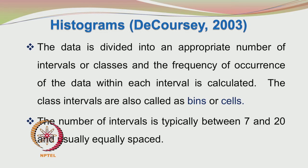So now you are not looking at individual students' marks but at the number of students who have got marks within a certain interval. For example, if the interval is 40 to 50, about 30 students in the class may have got marks between 40 and 50. The general recommendation for number of bins or intervals is between 7 and 20, and these intervals are usually equally spaced, though there may be situations where unequally sized intervals are used.